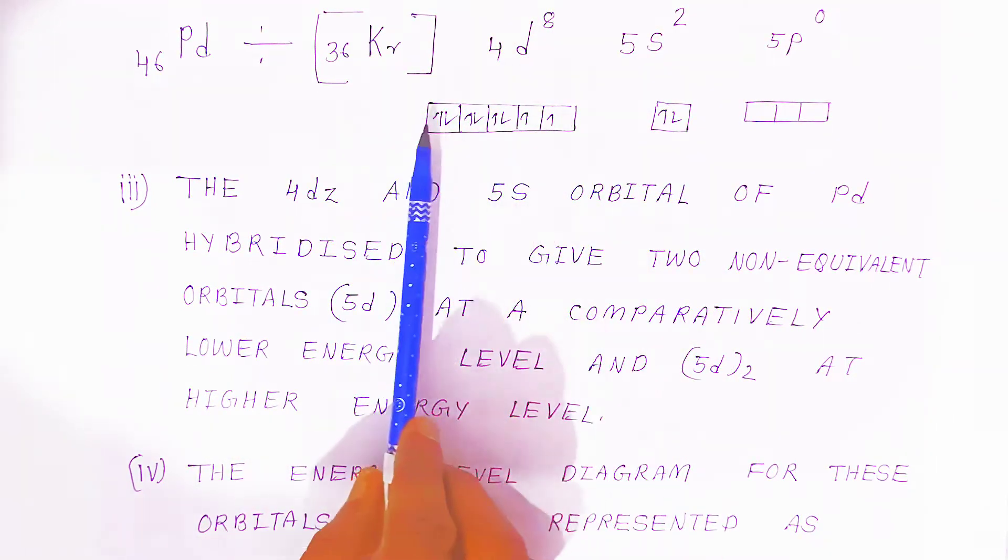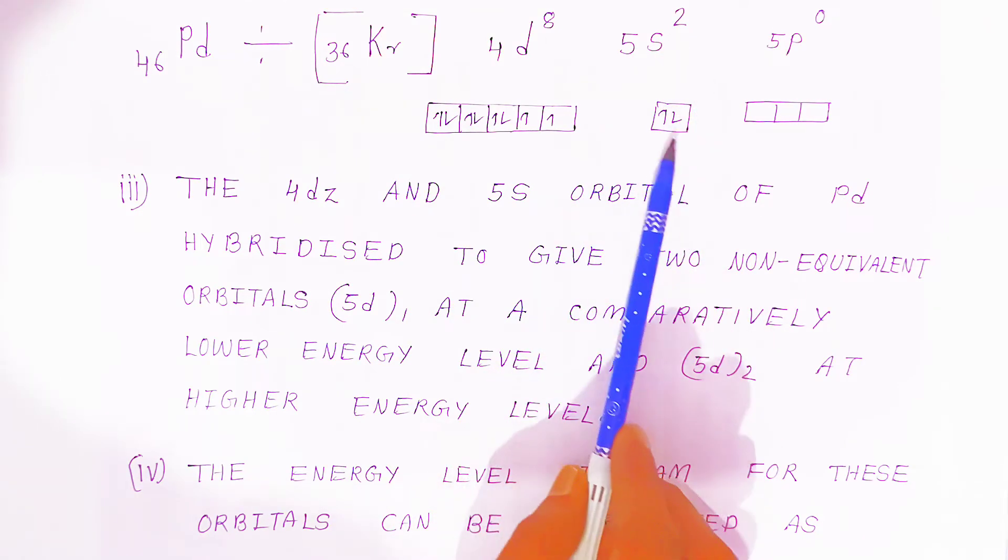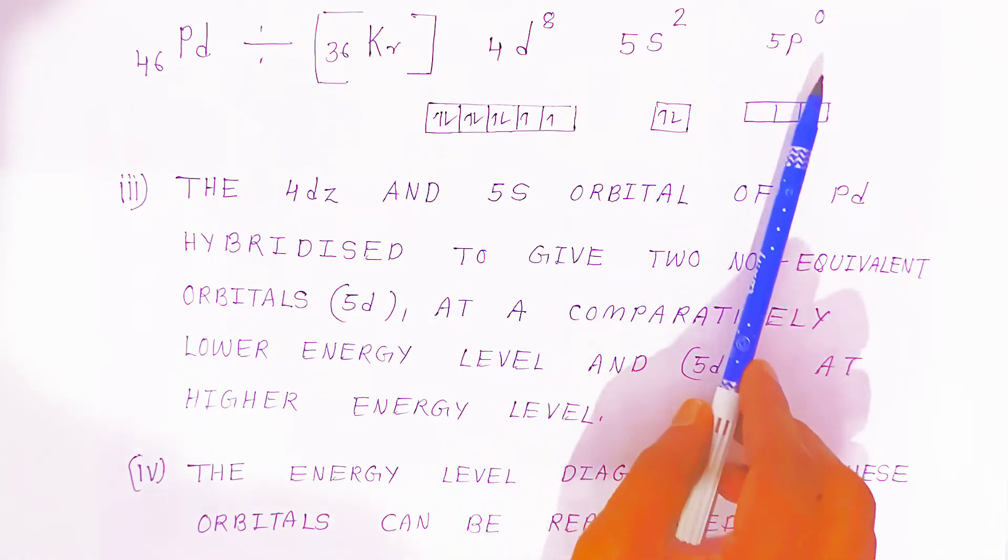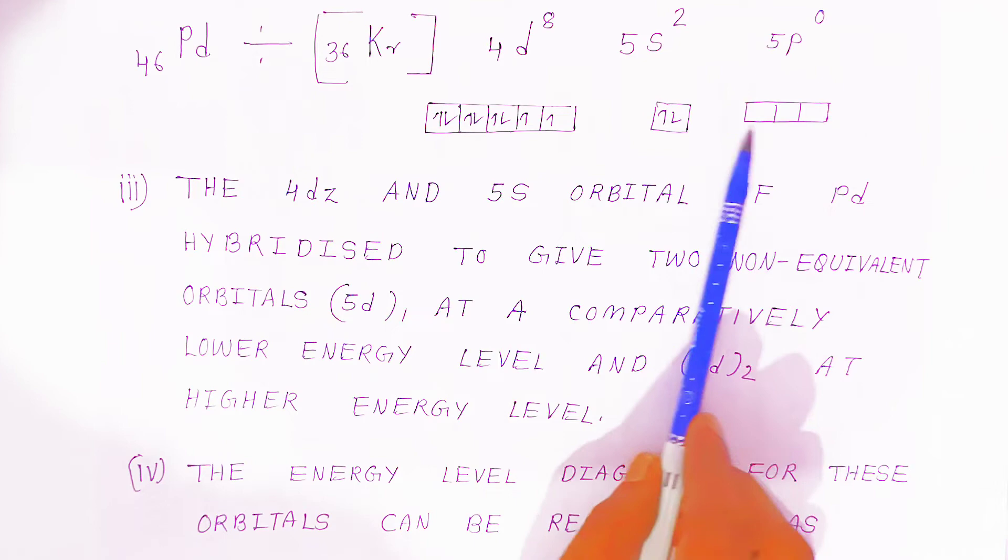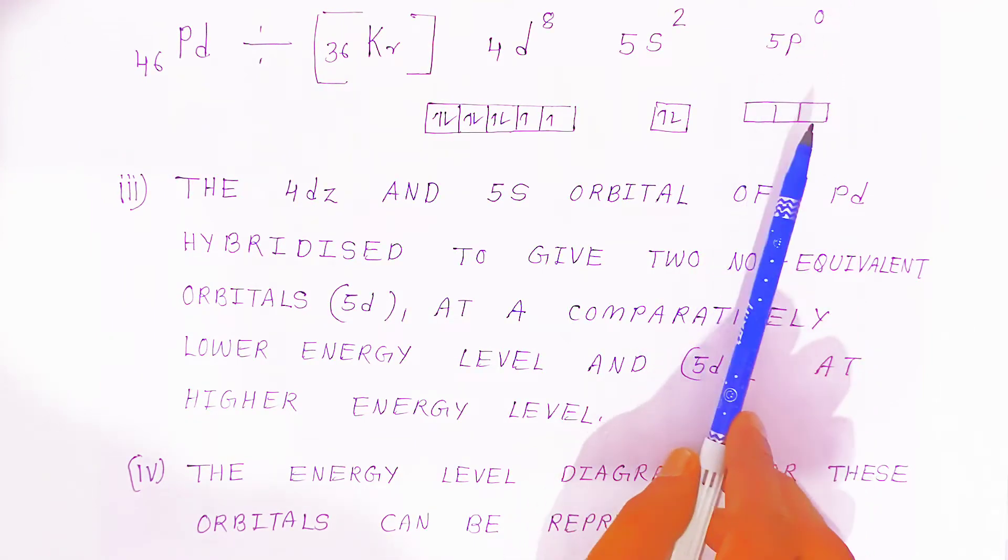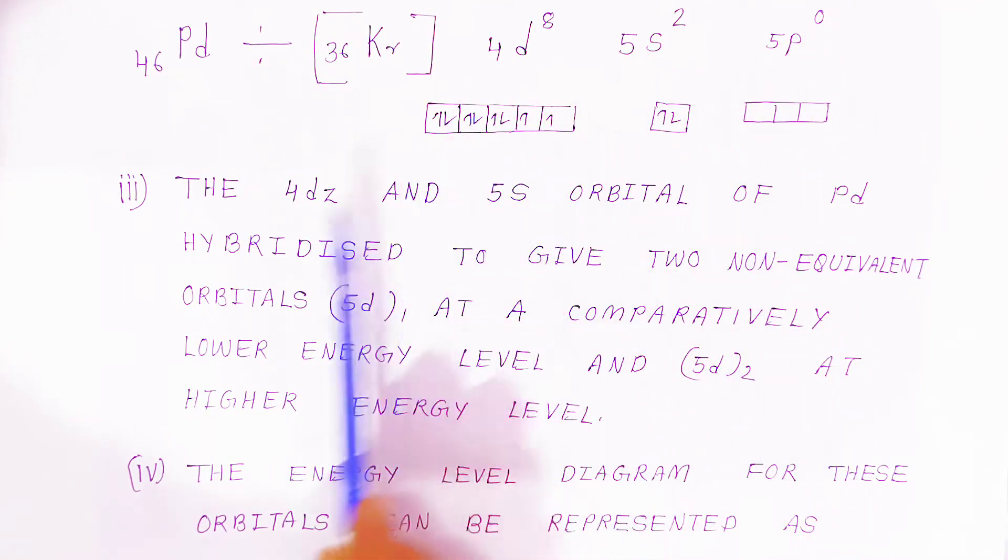The d sub-atomic orbitals and s electrons are like this, and p orbitals have no electrons. All the p orbitals are vacant. The atomic orbitals of palladium that are vacant include the p orbitals. Now here, the 4d is at a comparatively lower energy level and 5d is at a higher energy level.